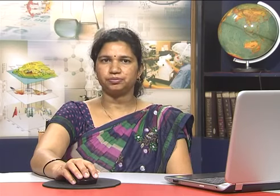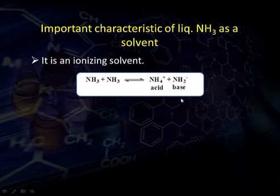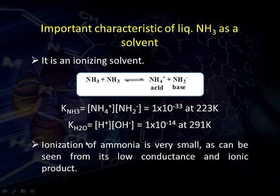Ionization of ammonia is very small, as seen from its low conductance and ionic product. The ionic product of water is 1×10⁻¹⁴, while that of ammonia is 10⁻³³ — so the ionic product of ammonia is much lower than that of water.